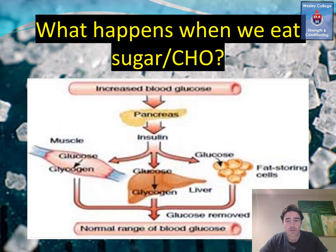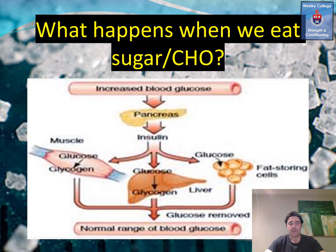So what happens when we eat sugars? When we eat sugar, our body converts it to glycogen. Glycogen stores in the muscles need to be really full so we have the energy to train and play to the best of our ability. When we eat sugars, the body converts it into glycogen and it's stored in the liver until we need it or burn it off. If there's too much of it, the body converts that glycogen into fat. In an ideal world, our bodies would go with the first option.